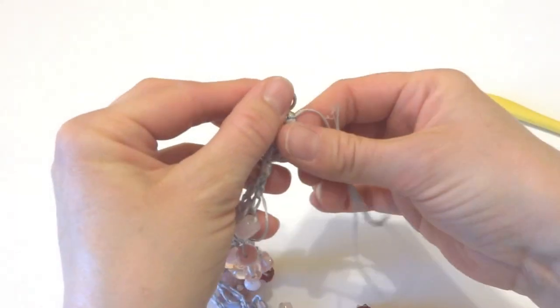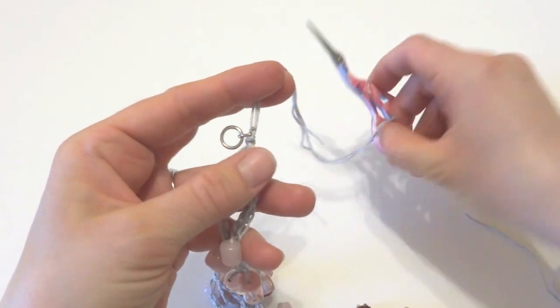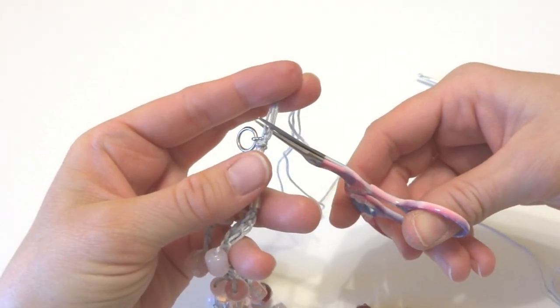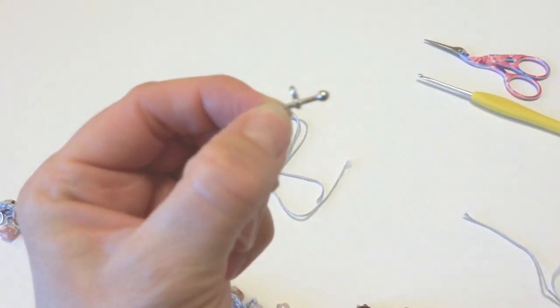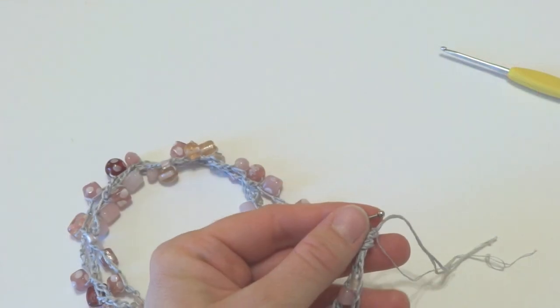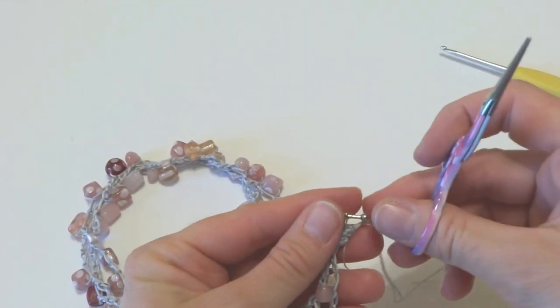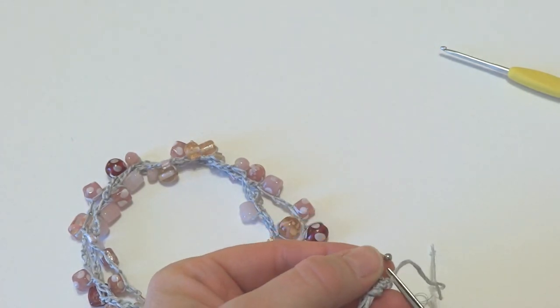Then you can take your scissors. We're just going to trim everything. So just trim everything nice and close. And then we're going to repeat the same for our other half of the toggle on the other side. So I went ahead and tied the other half of our toggle on. And then I'm just going to trim all these little ends that I have left.